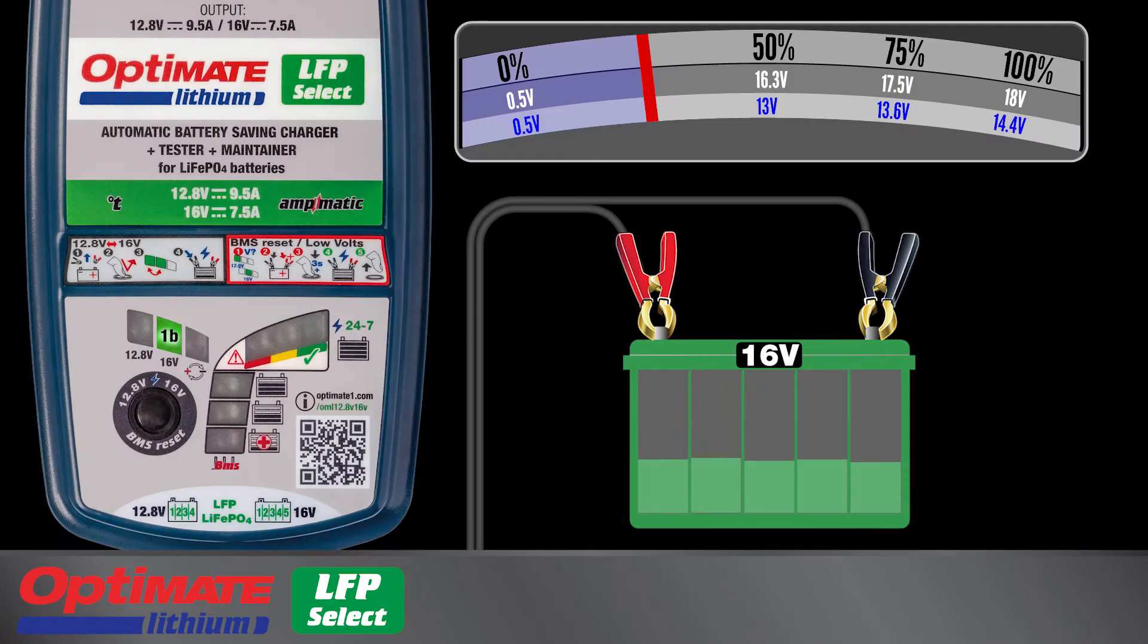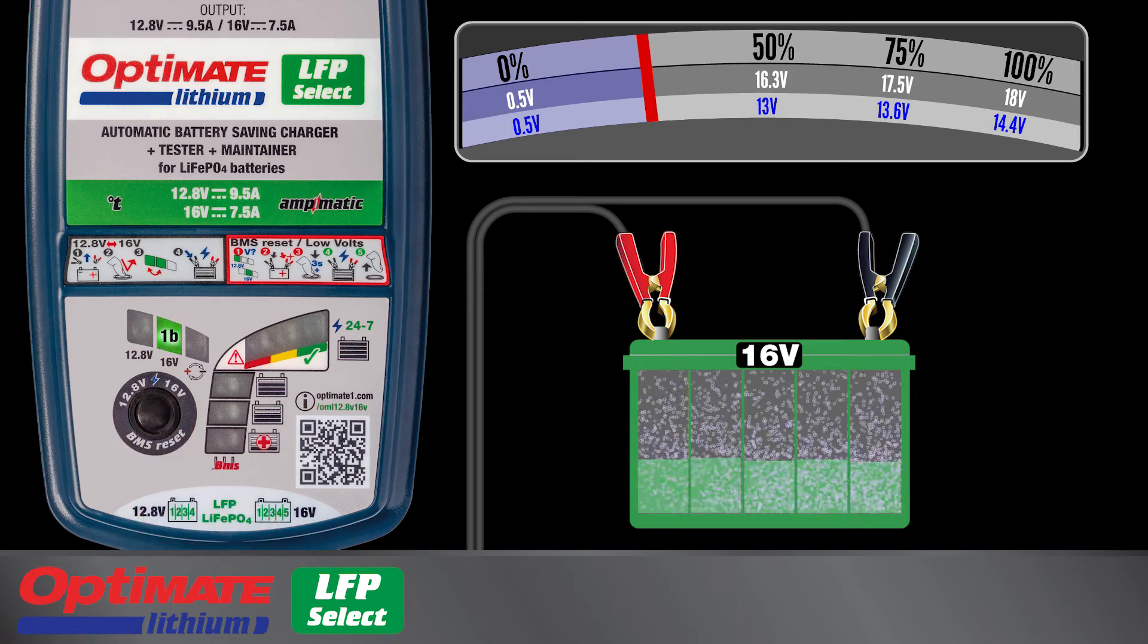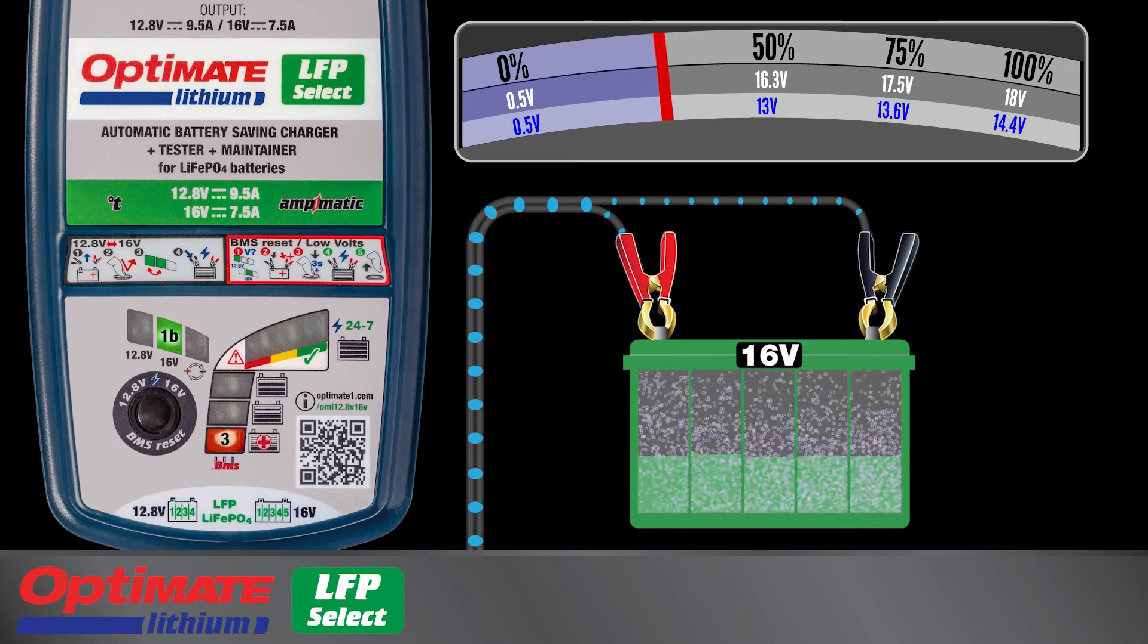A deep discharge 16 volt battery with voltage between 0.5 and 15 volts requires manual activation. Push and hold the button for at least 3 seconds until the 16 volt light turns full on together with lamp 3.